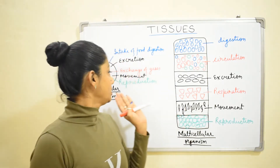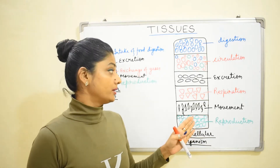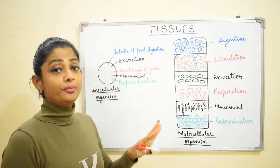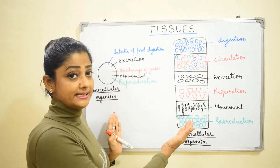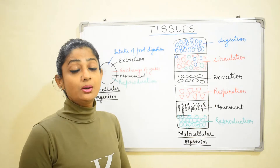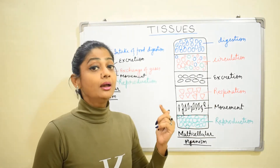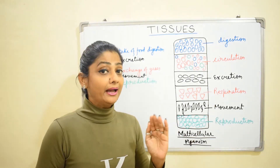I have made a unicellular organism and a multicellular organism here. However, any organism is not actually circular or rectangular — this is just to explain. A unicellular organism is made of one cell. Amoeba and paramecium are examples. And multicellular organisms like animals and plants are made of many cells.